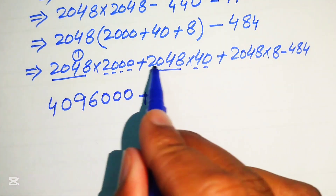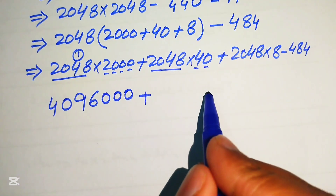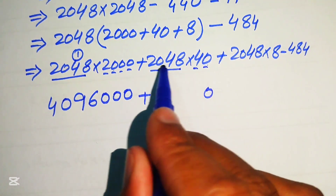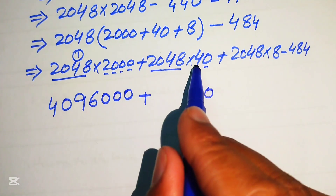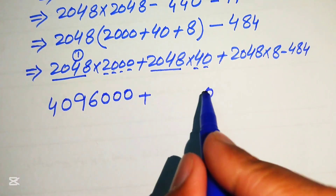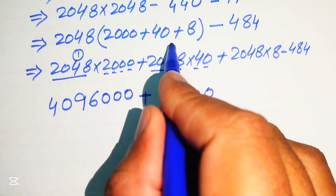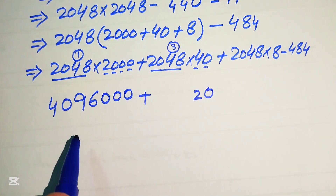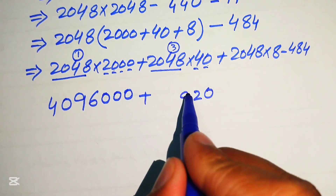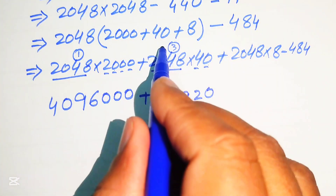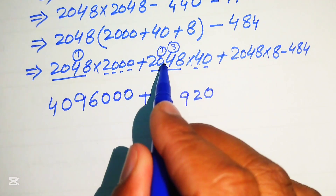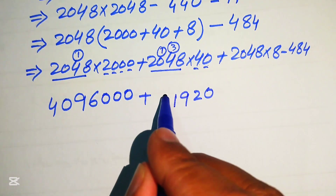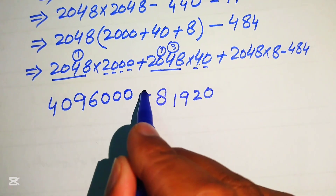Similarly, for 2048 times 40: multiplying by 0 gives 0, then multiplying by 4 — 4 times 8 is 32, write 2 carry 3; 4 times 4 is 16, plus 3 is 19, write 9 carry 1; 4 times 0 is 0, plus 1 is 1; 4 times 2 is 8 — giving 81,920.